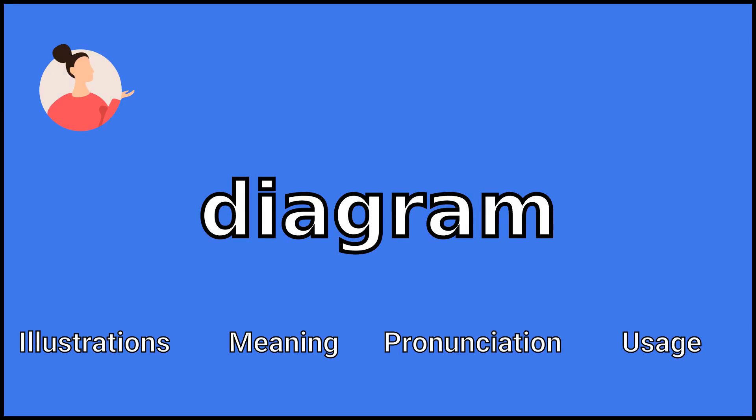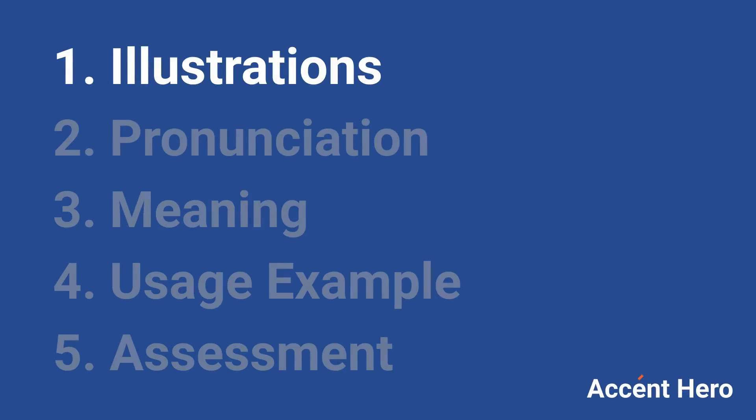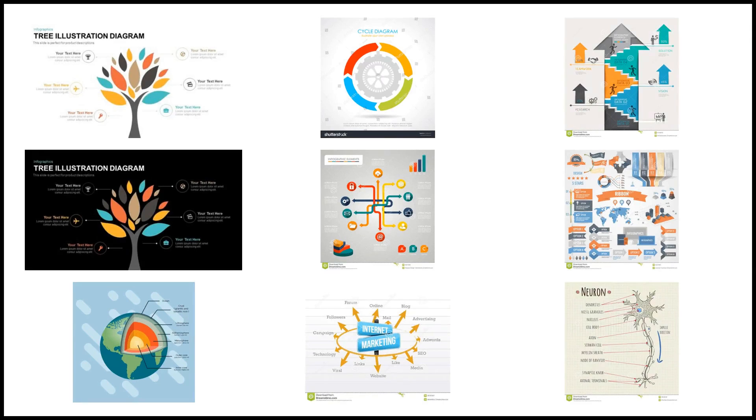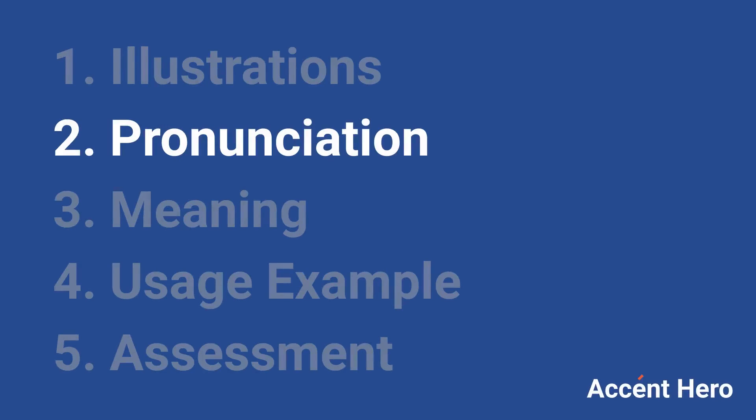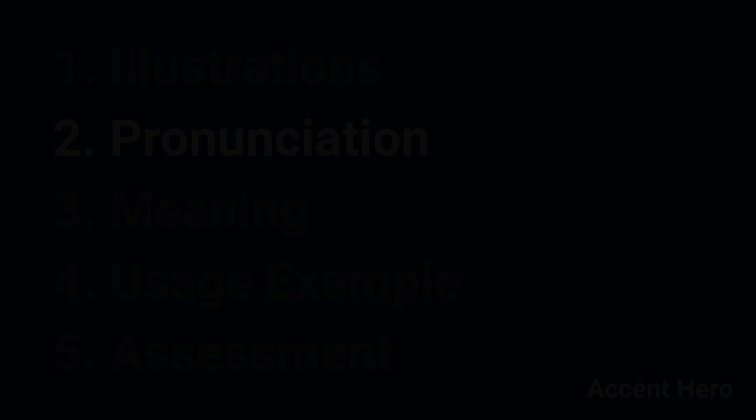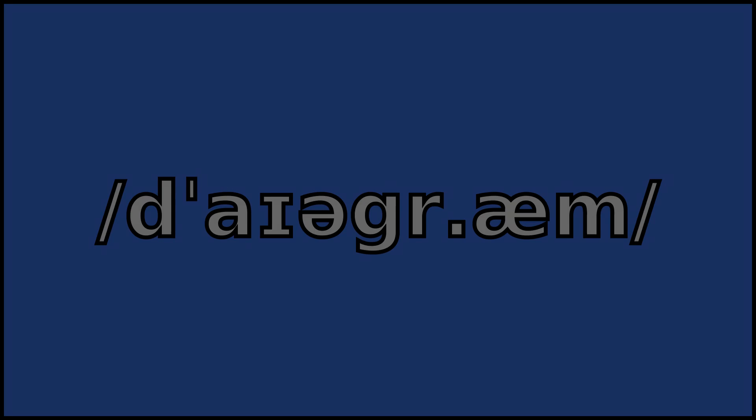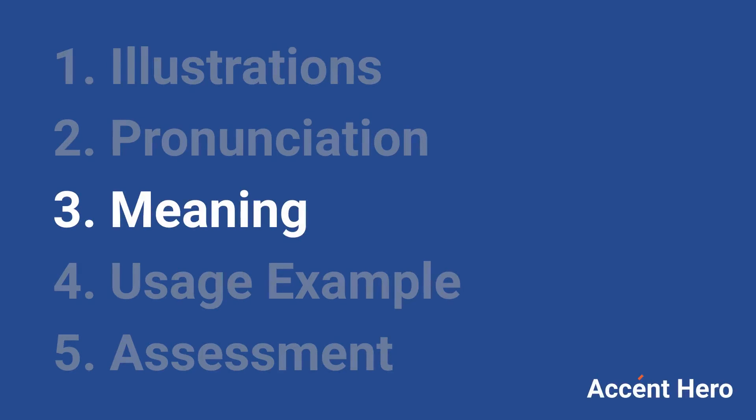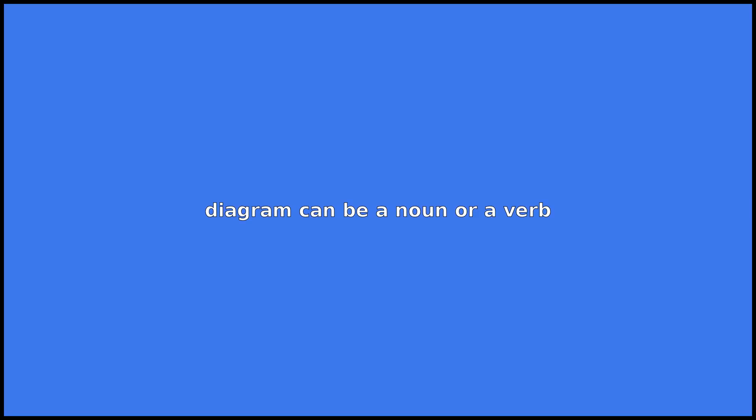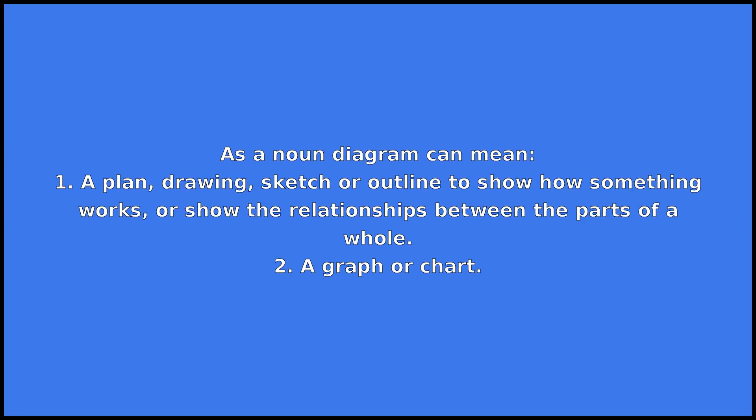Diagram can be a noun or a verb. As a noun, diagram can mean: one, a plan, drawing, sketch, or outline to show how something works or show the relationships between the parts of a whole. Two,